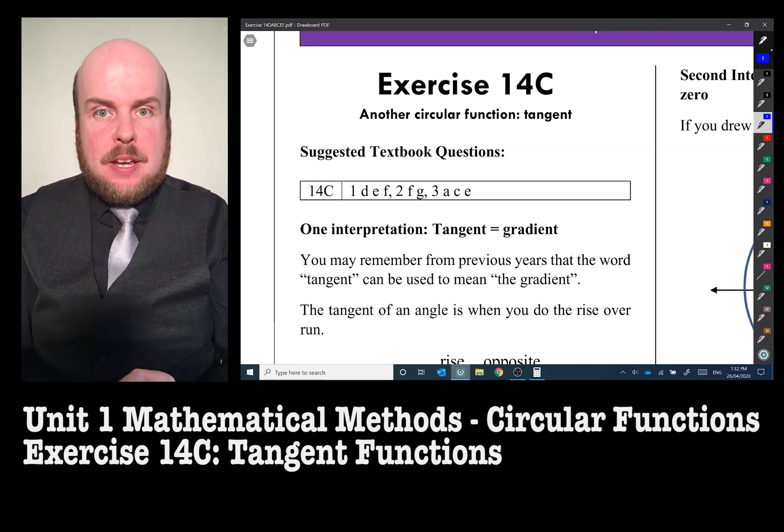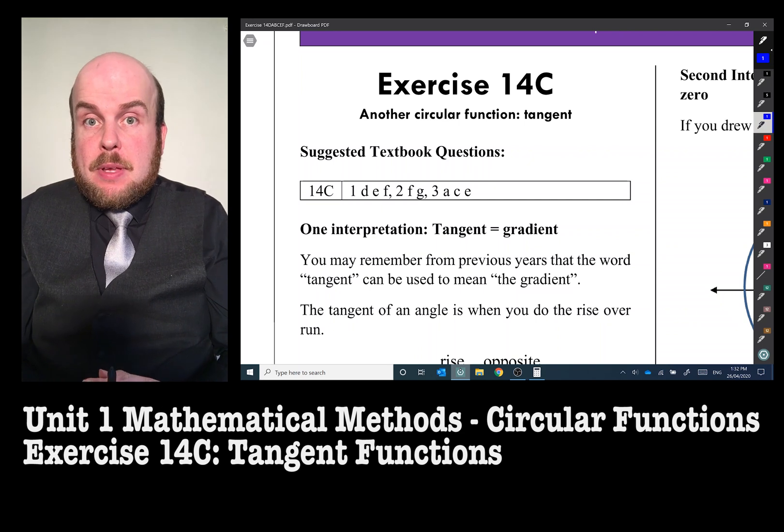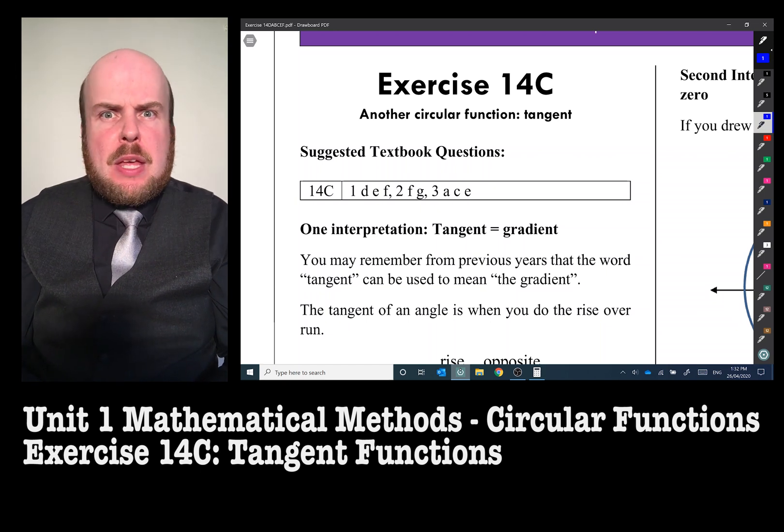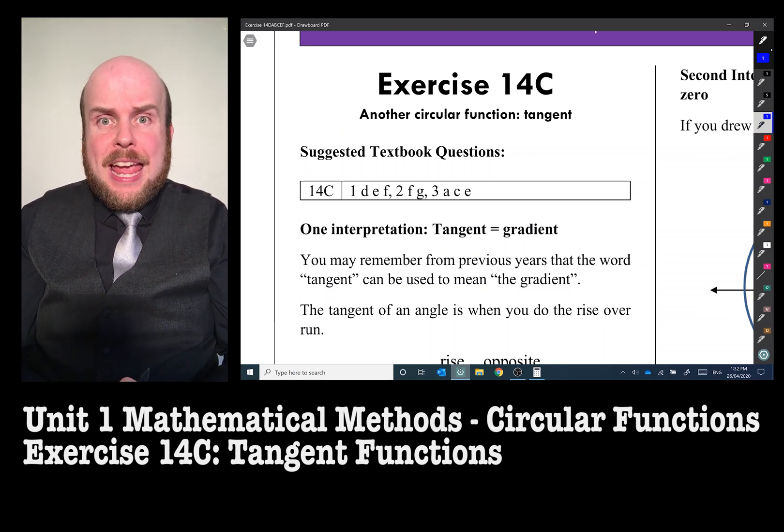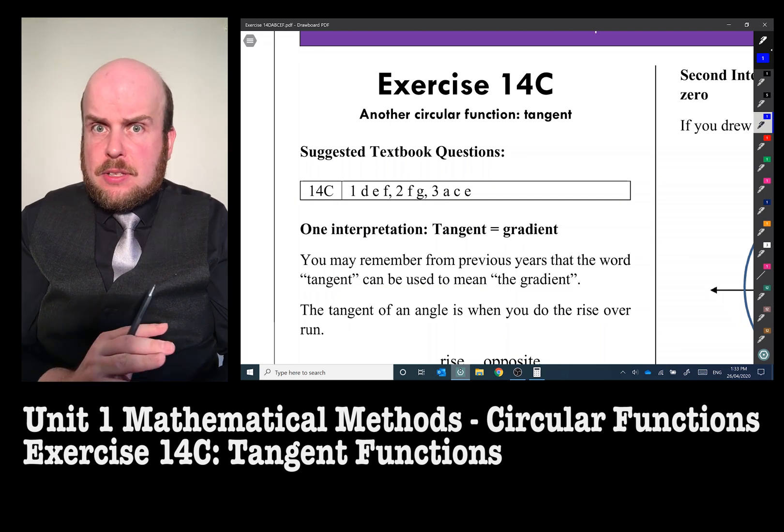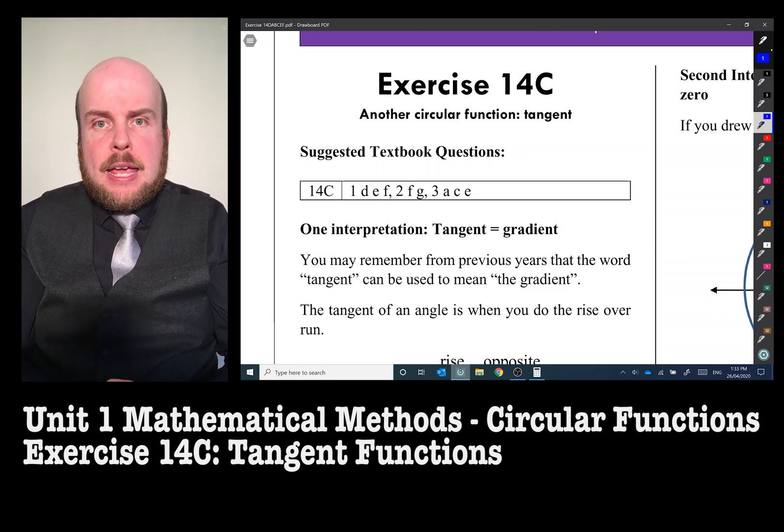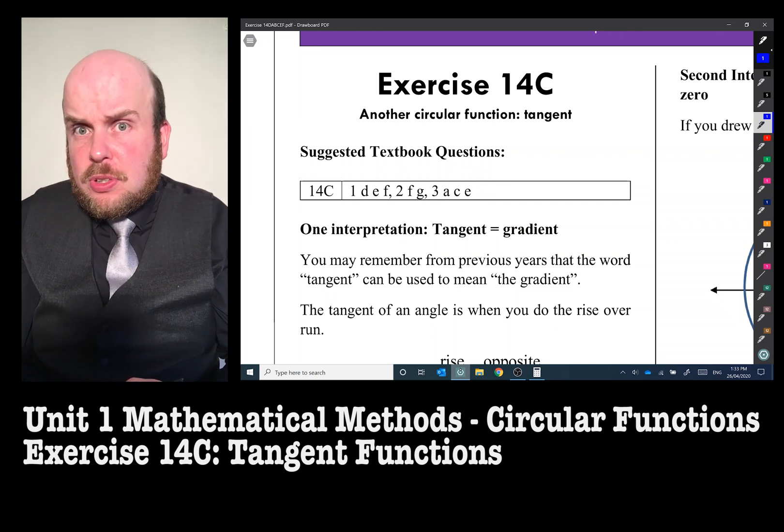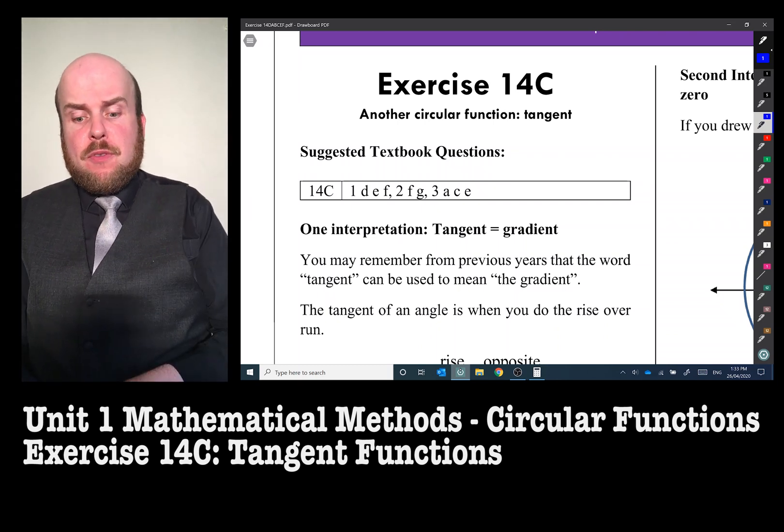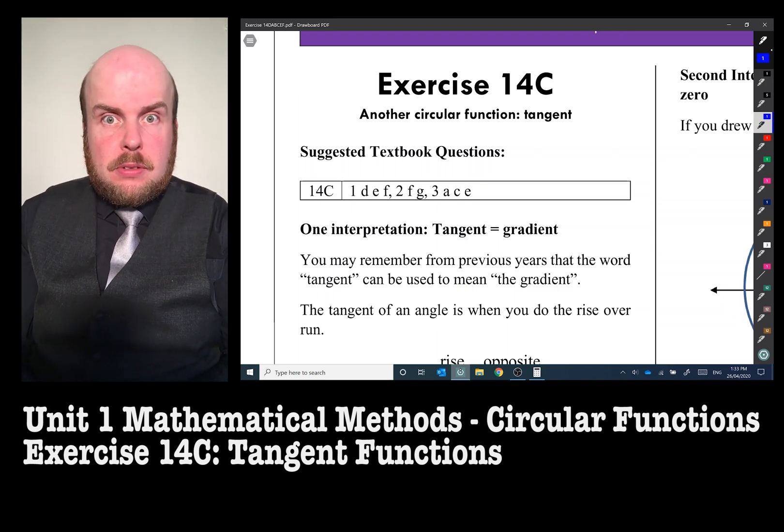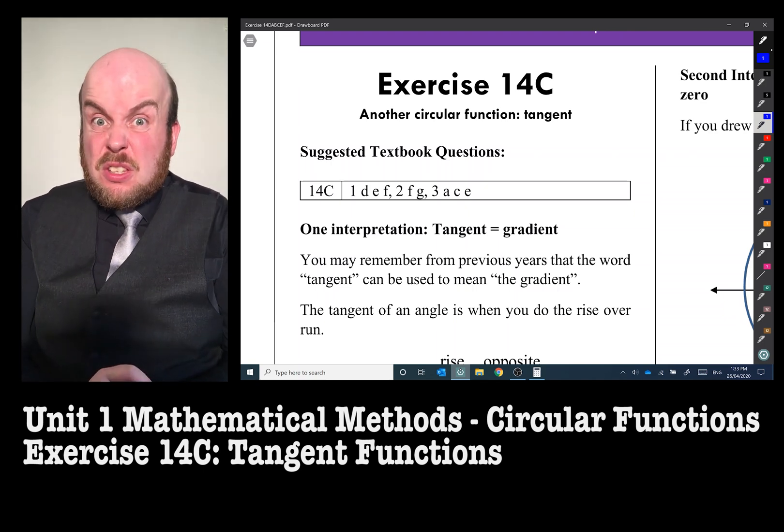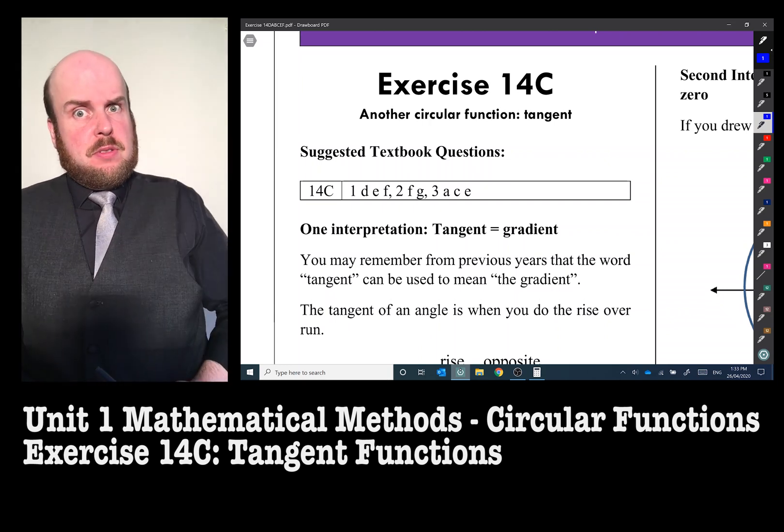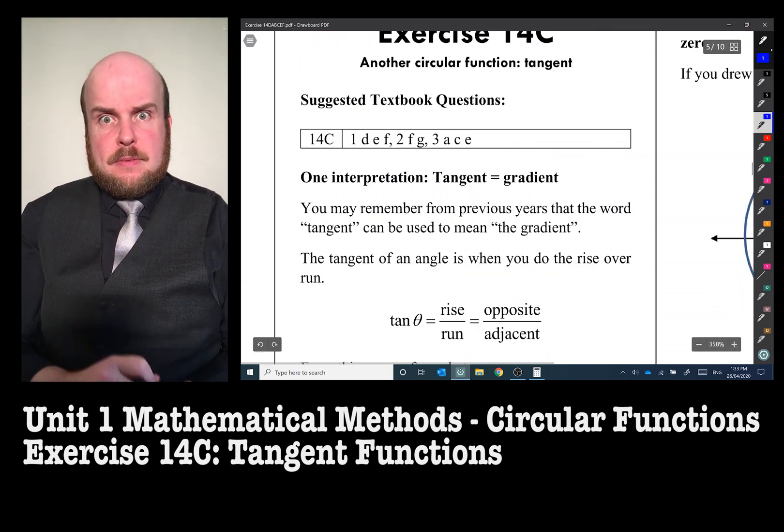Another circular function, the tangent. You might vaguely remember tangents from trigonometry as opposite over adjacent. You might also remember that we use these to refer to a line that cuts through or just touches a graph. So the tangent of a parabola is just a line that touches it once. It's sometimes referred to as the gradient, another word for gradient, because opposite over adjacent is very much the same calculation as doing rise over run. This will be very useful when we get to calculus.